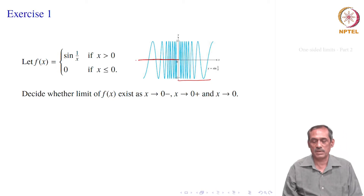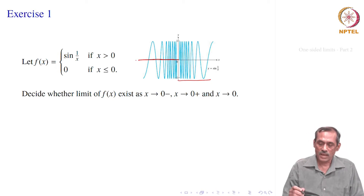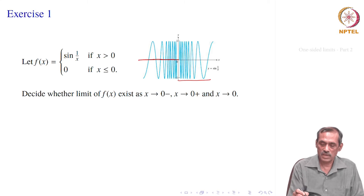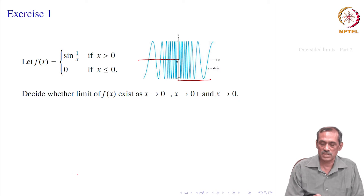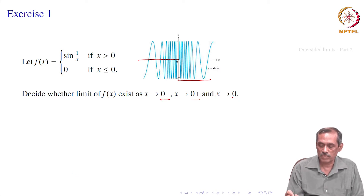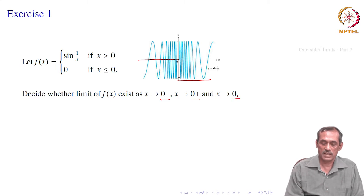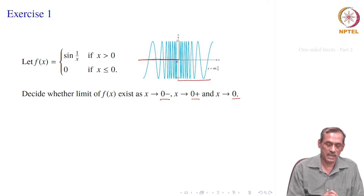So that is a different function — on the right side it is like sin(1/x), on the left side it is the constant 0. Now we are to find out whether the limit of f(x) exists as x goes to 0⁻, 0⁺, and 0, that is whether the left-sided limit, right-sided limit, and the overall limit exist or not.